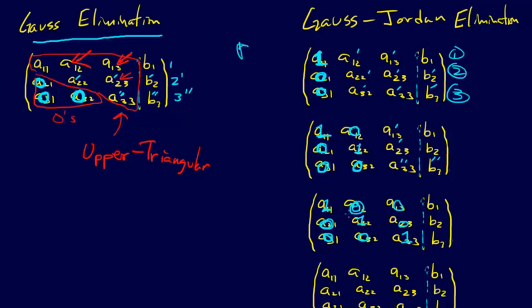But the only difference is you just normalize to get one on the diagonal. And you zero out both above and below the diagonal element.